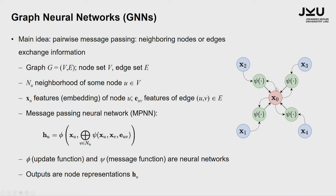The learning algorithm works by looking at every node's neighborhood. For node X0, it's connected to X1, X2, X3, X4. To compute the next hidden state or node representation of X0, we take the representation at the given time step, then take each neighbor and the edge to that neighbor and put it in a message function. So there's a message from X2 to X0 taking its values and how strong the edge is, and similarly from X3, X4, X1. These messages are aggregated up with an aggregation operator.